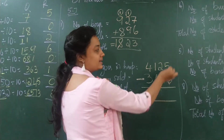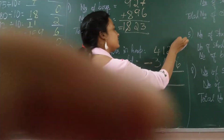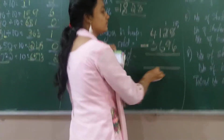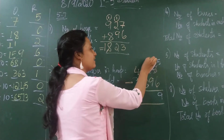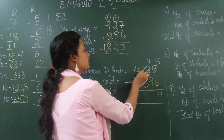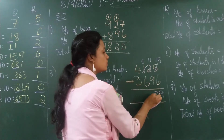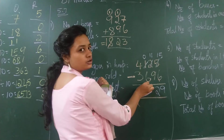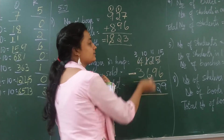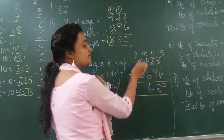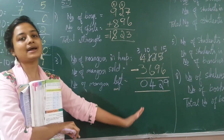So I am doing subtraction to find the answer. 5 minus 6 — I can't, so I borrow. 15 minus 6 is 9. 1 minus 9 — borrow again, 11 minus 9 is 2. 0 minus 6 — borrow, 10 minus 6 is 4. 3 minus 3 is 0. So 429 mangoes are left in the heap.